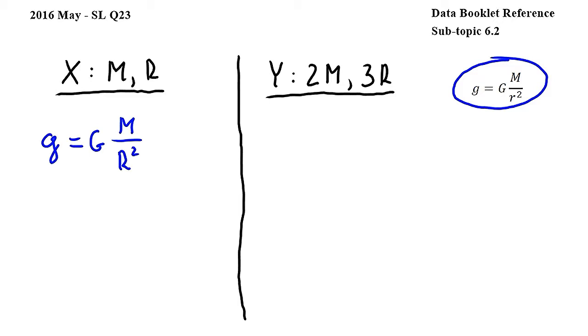Carrying out the same calculation for Y, we get g is equal to capital G times, and here I will substitute 2m for the mass and 3r for the radius, so we get 3r squared.